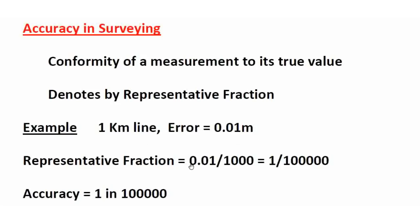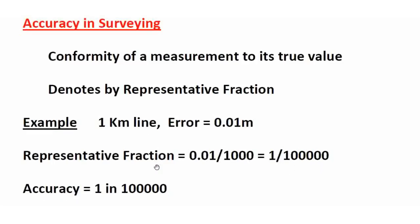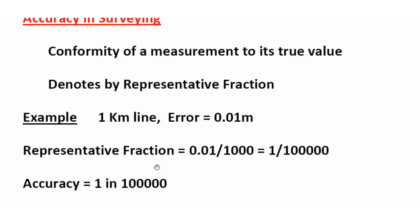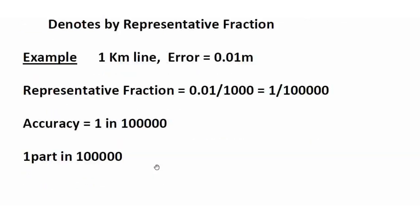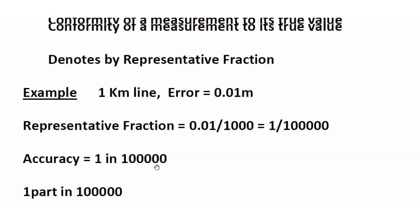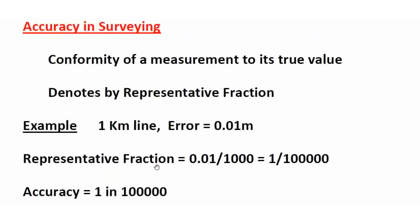The representative fraction equals error divided by true value. The error is 0.01 meter and the true value is 1 km, which equals 1000 meters. So, 0.01 divided by 1000 equals 1 divided by 1 lakh. Therefore, the accuracy is 1 in 1 lakh — this is the accuracy in surveying.